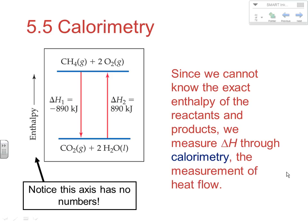You'll notice with our enthalpy diagrams that we've been looking at in previous notes, there are no axis numbers. So we don't really say where the enthalpy is at — it's just that it's increasing enthalpy. We don't really know where this is on the enthalpy scale. What we do know and what we do look at is what that change in enthalpy is.